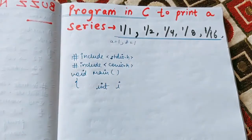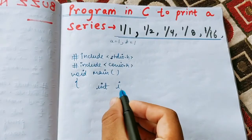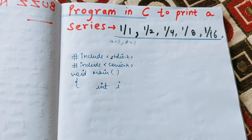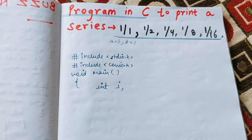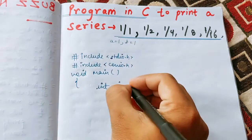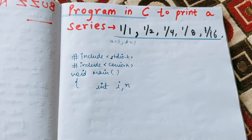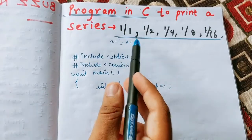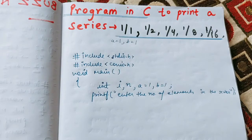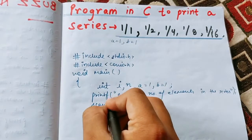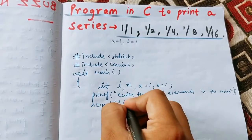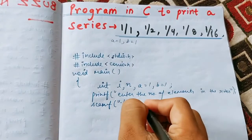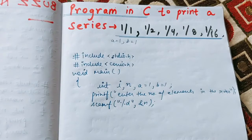We've declared the header files and written void main. We're taking int i — we'll use i for the for loop. We also take n for the number of elements, since we don't know how many to print, so we take that input from the user. We initialize a equal to one and b equal to one. We prompt 'enter the number of elements in the series' and take the input using scanf with %d and the address of n.